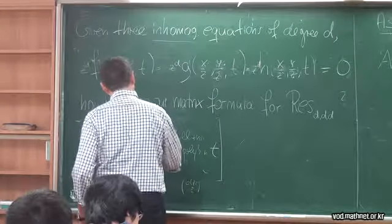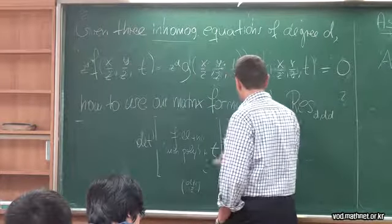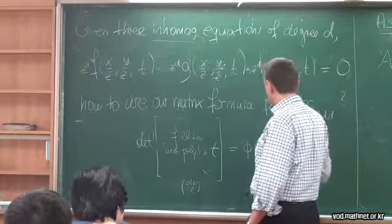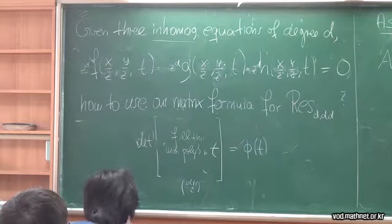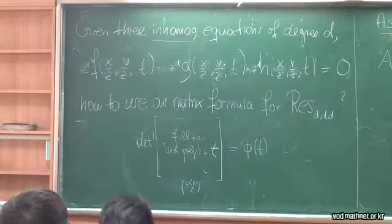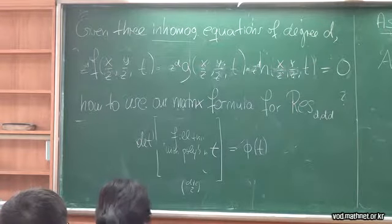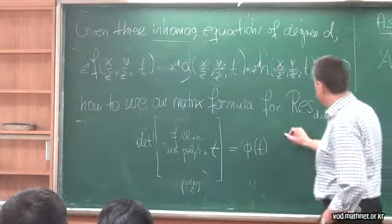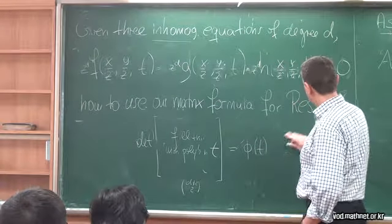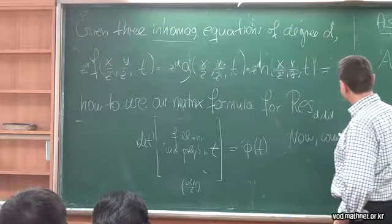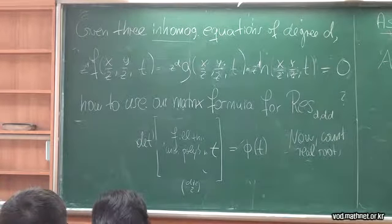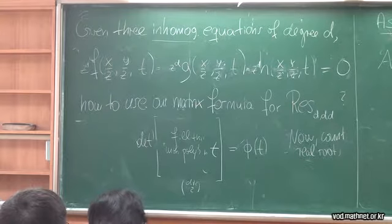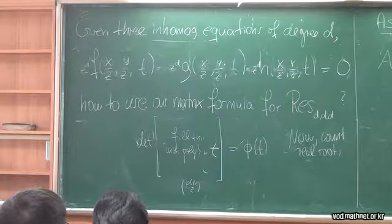We take the determinant of this matrix. This will be a polynomial in one variable t, and that polynomial generates the principal elimination ideal of the given equations. So this is the projection onto the variable that was originally called z, but for clarity we've called t. Generically this will be one-to-one, so all the roots of the original system will have distinct t-coordinates.